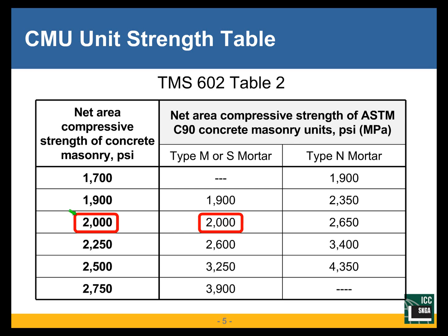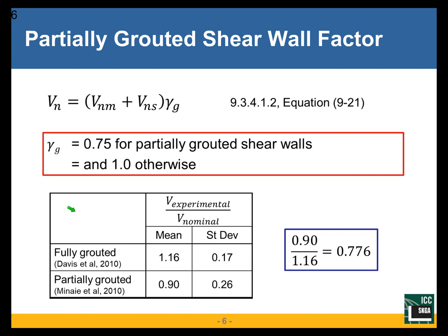This table can be a little confusing, but essentially if we need an F'm of 2000 psi, we need a 2000 psi unit with type S mortar, or if we're using type N mortar, we need a 2650 psi unit. These columns show the strength of the unit, and this column is F'm — the strength of the assembly. I'll be using 2000 psi in most of my examples.